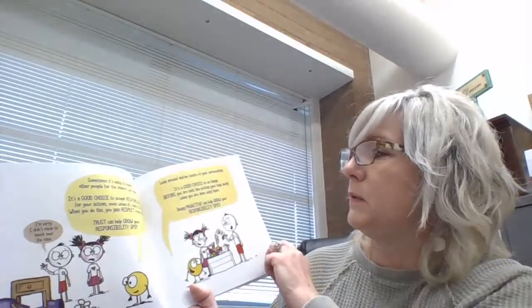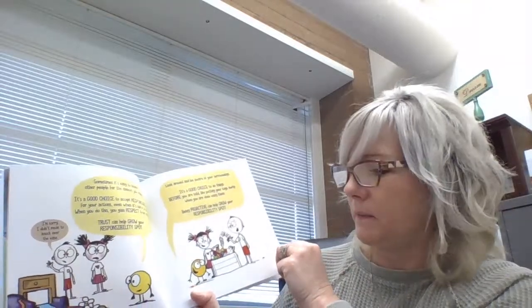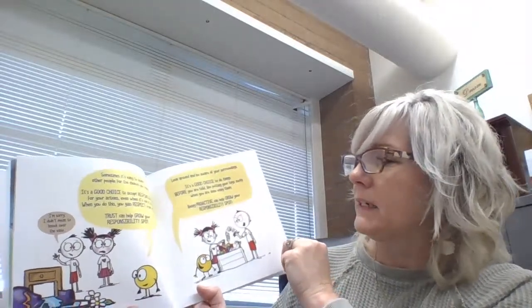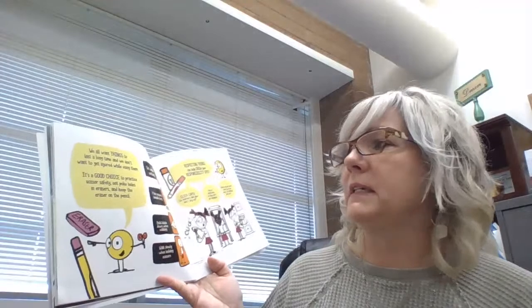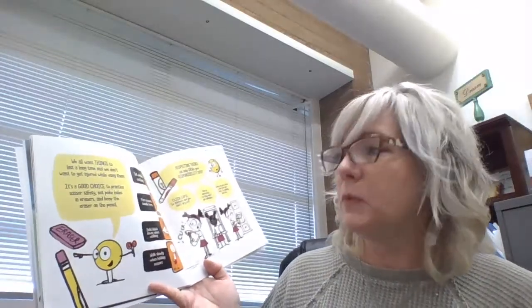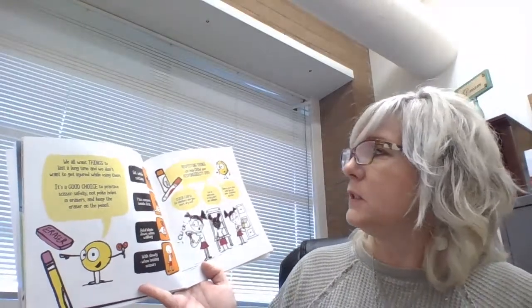Look around and be aware of your surroundings. It's a good choice to do things before you're told, like putting your toys away when you're done using them. Being proactive can help grow your responsibility spot. We all want things to last a long time and we don't want to get injured while using them. So it's a good choice to practice scissor safety, not poke holes in erasers, and keep the eraser on the pencil. Respecting things can help grow your responsibility spot.